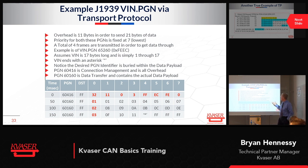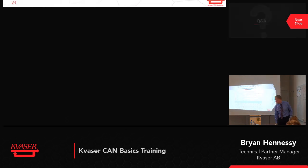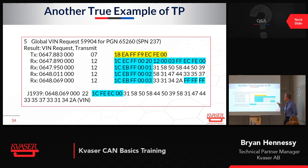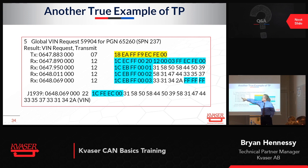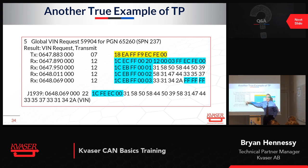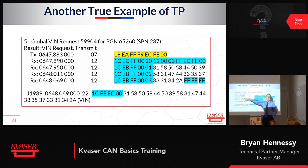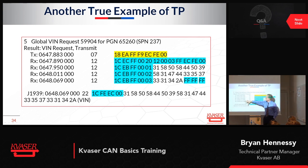Those are the basics of J1939 transport protocol. Now let's look at a real-world example pulled from an actual truck. I cut this out of a larger data series, eliminating all data in between, because at 250k baud there could be 140 messages within the 70 milliseconds between frames. I'm only showing what's relevant to the transport protocol, but it's important to realize these messages came from a very large collected data set.